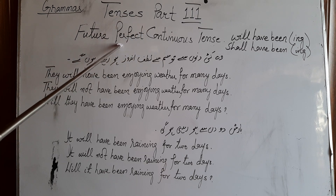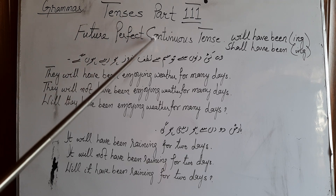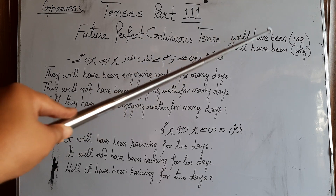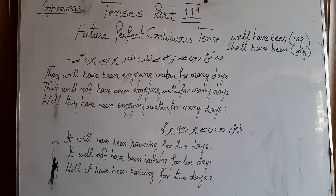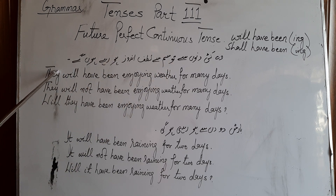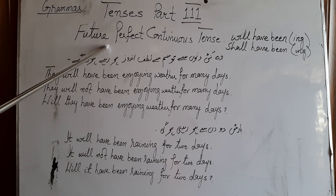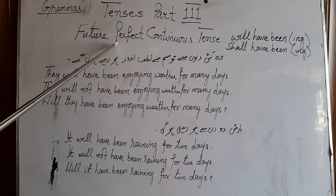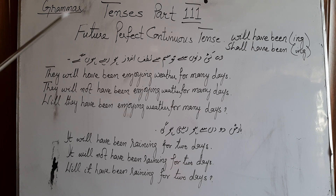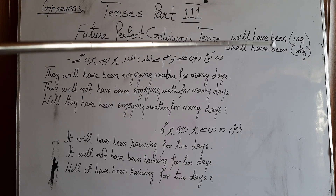کوئی کام پہلے سے شروع ہو چکا ہوگا لیکن future میں کہیں جاری ہوگا۔ Will have been, shall have been, and ing with verb. They will have been enjoying weather for many days. They will not have been enjoying weather for many days. Will they have been enjoying weather for many days? کوئی کام پہلے سے شروع ہوا ہوگا لیکن future میں بھی جاری ہے، ختم نہیں ہوا۔ Will have been, shall have been, and ing with verb.